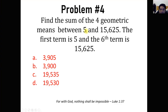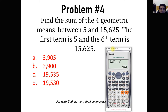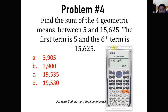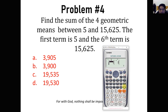For the last problem: find the sum of the four geometric means between 5 and 15,625. The first term is 5 and the sixth term is 15,625. We need to find the sum of the 2nd, 3rd, 4th, and 5th terms only. Enter the data: first term x equals 1, y equals 5; sixth term x equals 6, y equals 15,625.